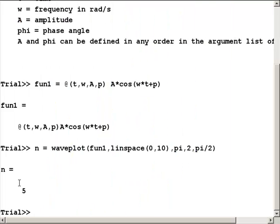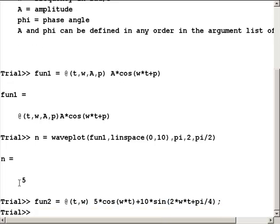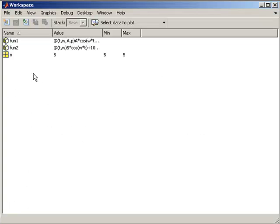So let's try another function. We'll define a second function, fun2. This one, we'll just use t and w as our variables, t being our independent variable, w being a parameter. We'll set this equal to 5 times cosine of w times t plus 10 times sine of 2 times w times t plus pi over 4. Now we have a second anonymous function. We'll go over and see what's happening in our workspace. We now have two functions plus the variable n that was output the first time.